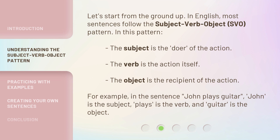For example, in the sentence 'John plays guitar,' John is the subject, plays is the verb, and guitar is the object.